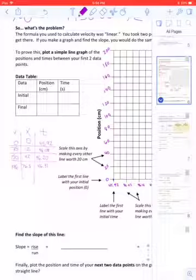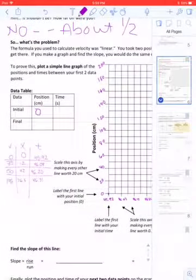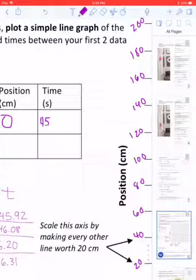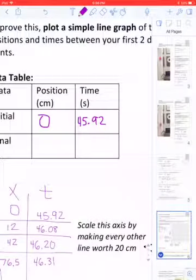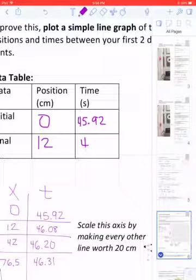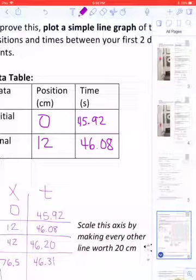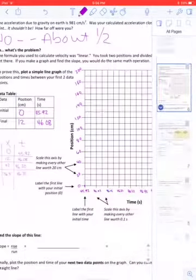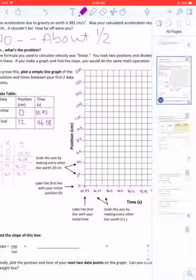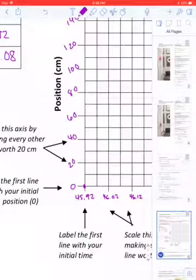My initial position was 0. I started out at 0. And my initial time was 45.92 seconds. The second data point was 12 centimeters and 46.08 seconds. That is what I want to plot on my graph. So 0 and 45.92 ought to be the origin if I set up my graph correctly. And there it is.